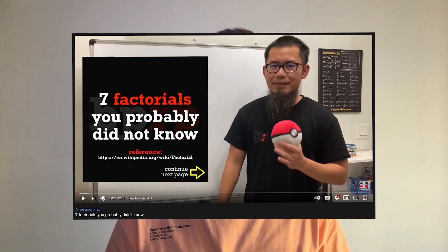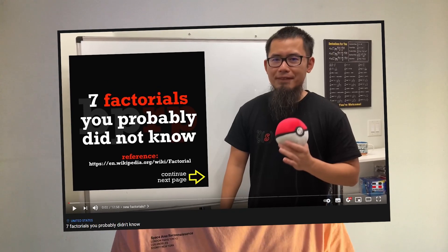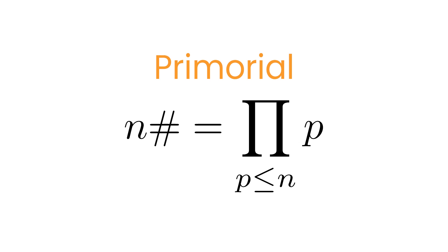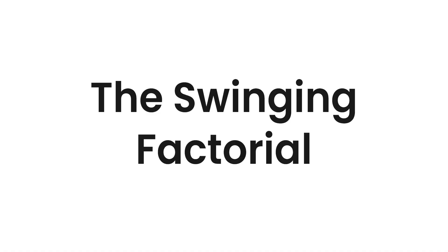One month ago, Blackpen Redpen uploaded '7 Factorials You Probably Didn't Know' — link in the description. In that video, he talks about 7 functions closely related to factorial, for example double factorial, primorial, or slow and super factorial. Although I love these special functions and I think Blackpen Redpen did a great job showcasing them, I'm truly disappointed because he missed one of the most cool and interesting ones: the swinging factorial.